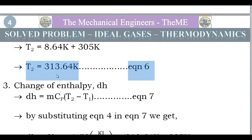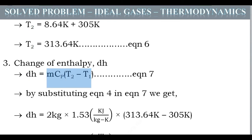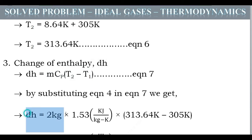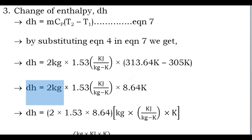We have found the final temperature: T2 = 313.64 K. Now we find the change of enthalpy ΔH. The formula is ΔH = M·Cp·(T2 − T1). We know M = 2 kg, Cp = 1.53 kJ/kg·K, T2 = 313.64 K, T1 = 305 K. So ΔH = 2 × 1.53 × (313.64 − 305) = 2 × 1.53 × 8.64.